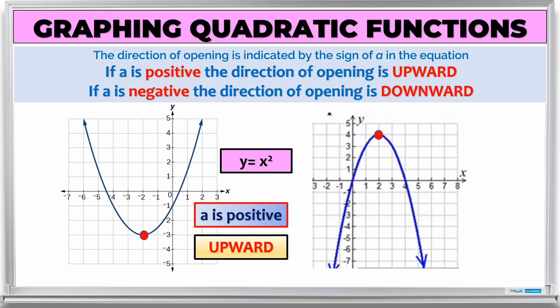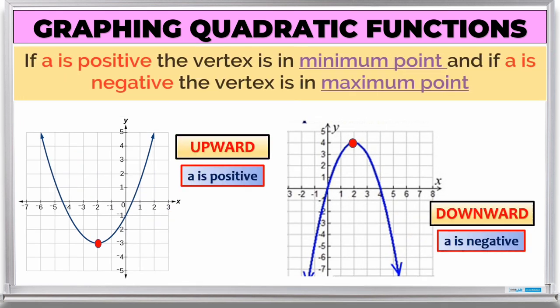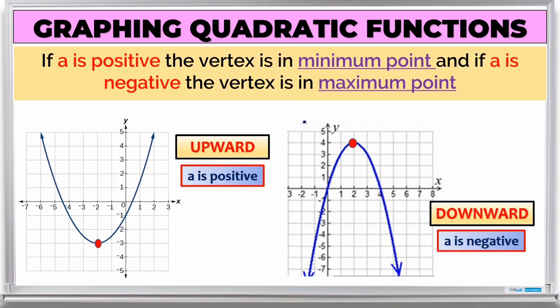On the other hand, if the function is y = -x², the value of a is negative, so the graph opens downward. If a is positive, the vertex is at the minimum point. If a is negative, the vertex is at the maximum point.